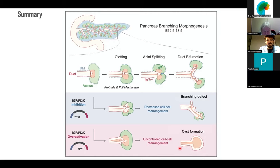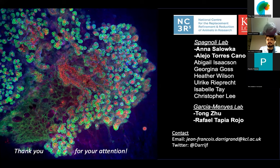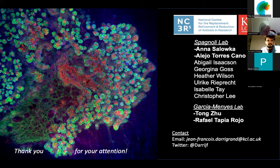Our results could also extrapolate to the formation of other branched organs such as salivary glands, lungs, or kidneys, which we want to investigate further. These findings could also be leveraged in vitro, for example, to make highly branched organoids with more physiological relevance. I would like to thank the lab of Francisco Spagnoli, and the help of Anna and Alejo for some of the explant cultures, as well as the lab of Garcia Menias with whom I've done some atomic force microscopy experiments. Thank you for your attention, and I'm happy to take any questions.